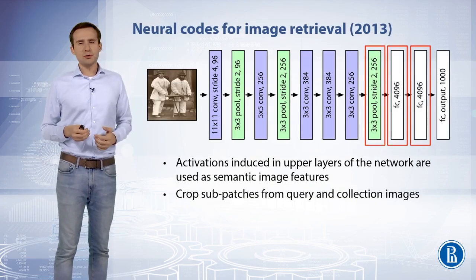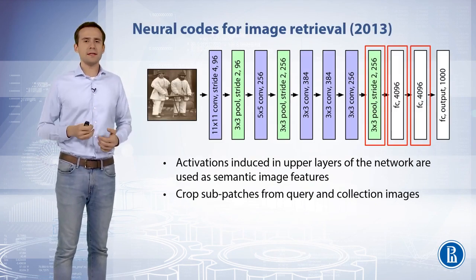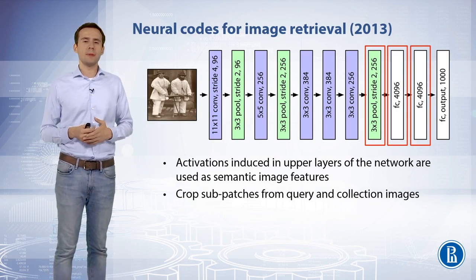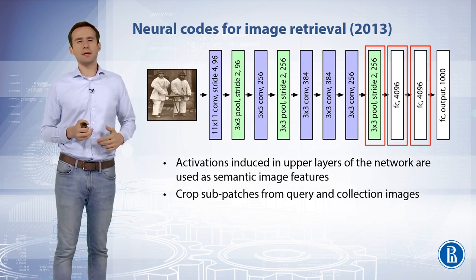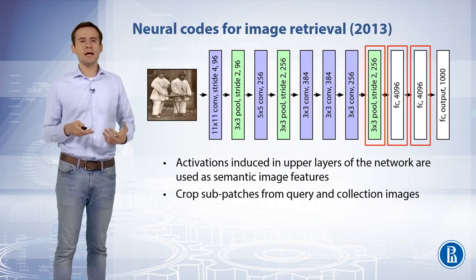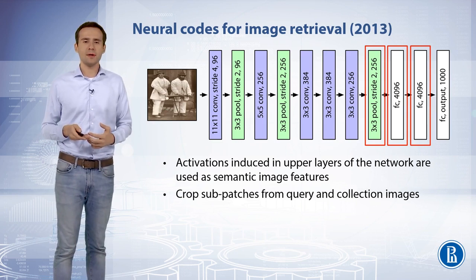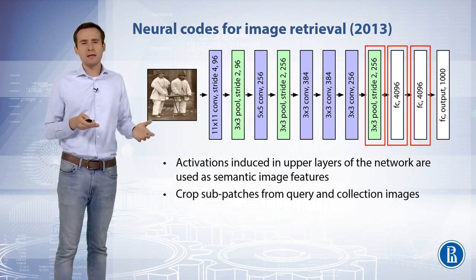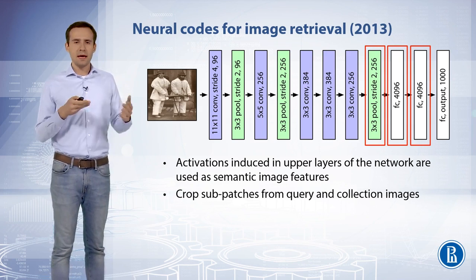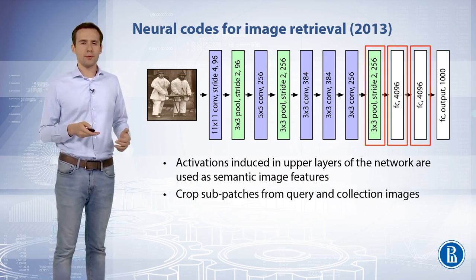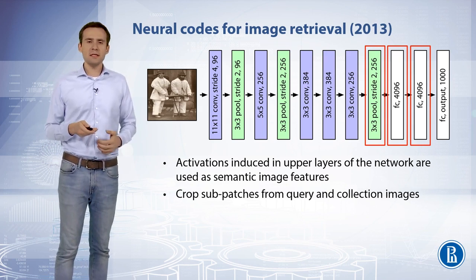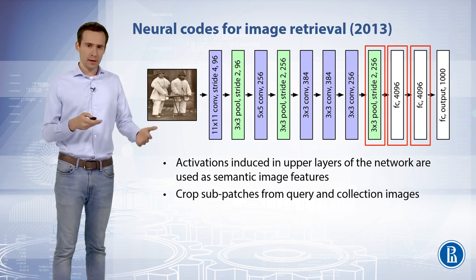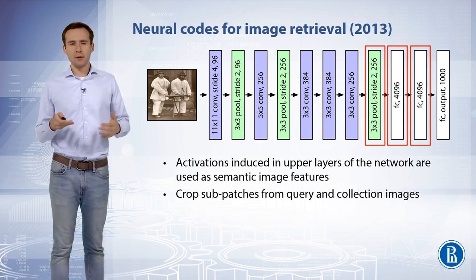The crude image search algorithm using deep convolutional neural networks has the following form. We fix some layer in the network whose activations are to be used as semantic image features. For instance, we may use the output of layers 5, 6, or 7 in the AlexNet network prior to the ReLU transform. Each of these high-dimensional vectors represents a deep descriptor, or neural code, of the input image.